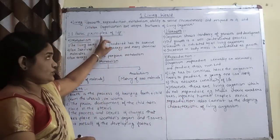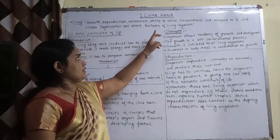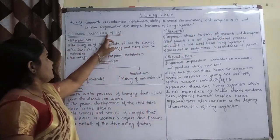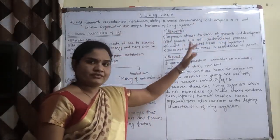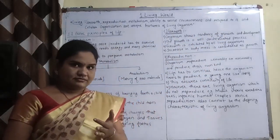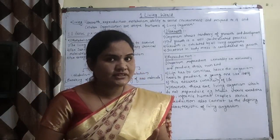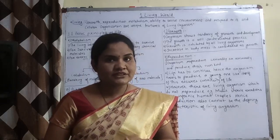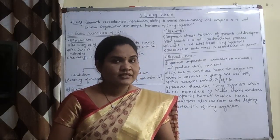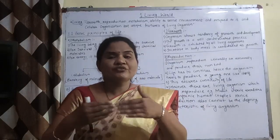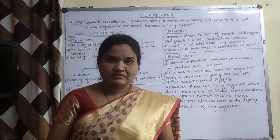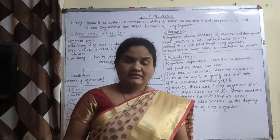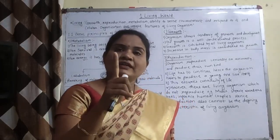Living — growth, reproduction, metabolism, ability to sense environment and respond to it, and cellular organization are unique features of living organisms. अगर किसी चीज़ की growth हो सकती है, उसका birth हो सकता है, उसकी death हो सकती है, उसकी body cells से बनी होगी, और उसको पता चल रहा है कि environment में क्या हो रहा है — ठंडी हो रही है, गर्मी हो रही है — और वो climate change को feel कर सकता है, तो इसका मतलब वो living है।